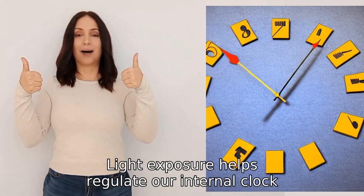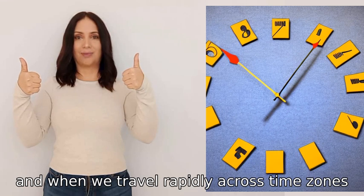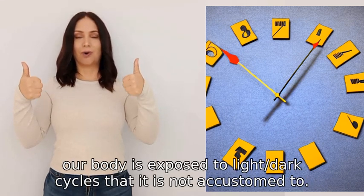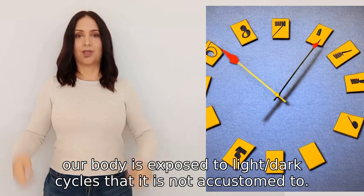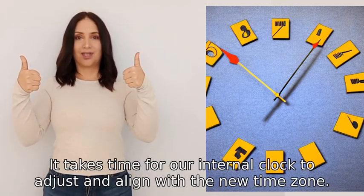Light exposure helps regulate our internal clock, and when we travel rapidly across time zones, our body is exposed to light and dark cycles that it is not accustomed to. It takes time for our internal clock to adjust and align with the new time zone.